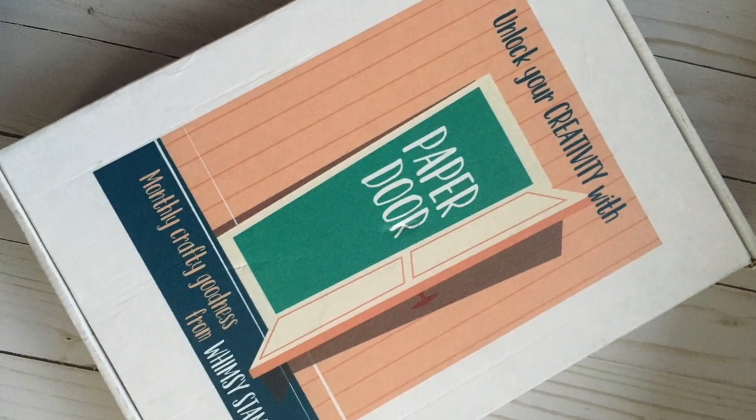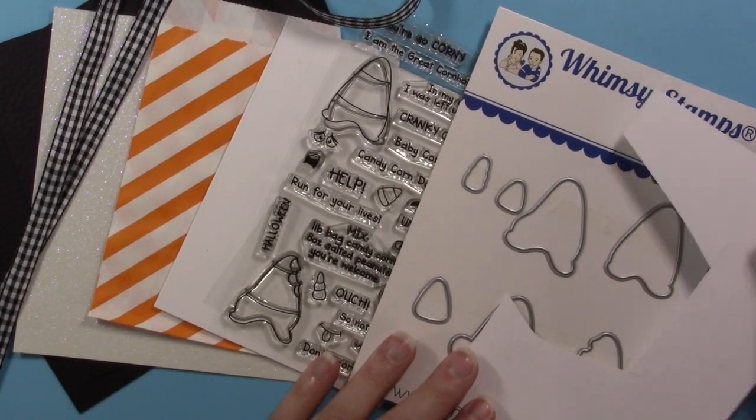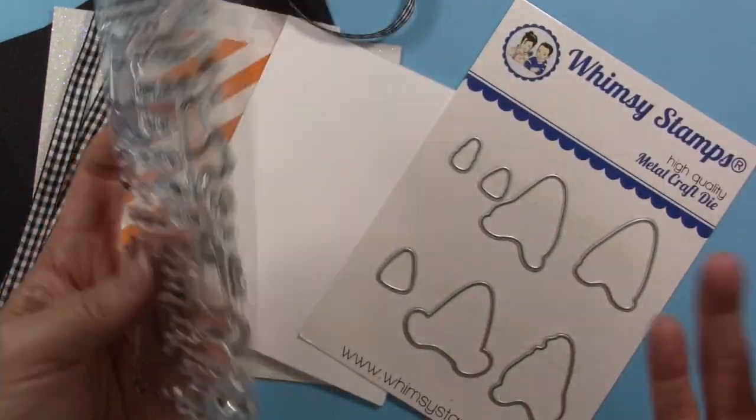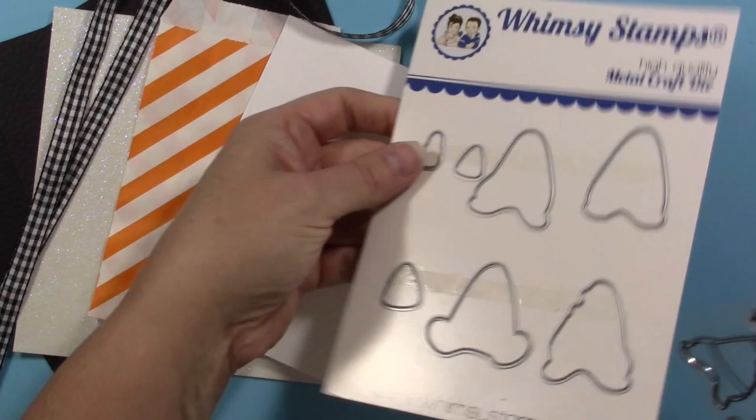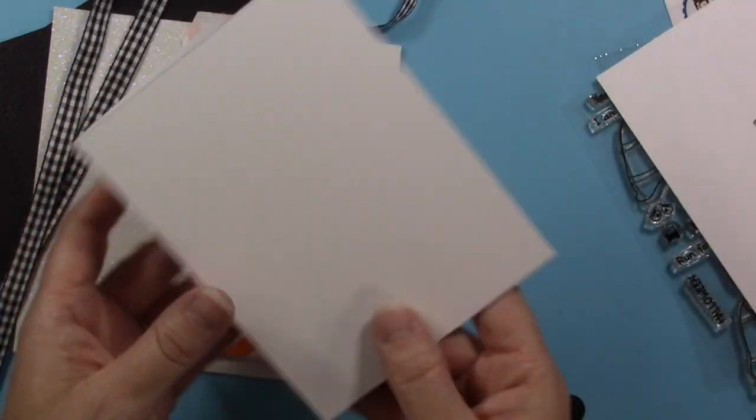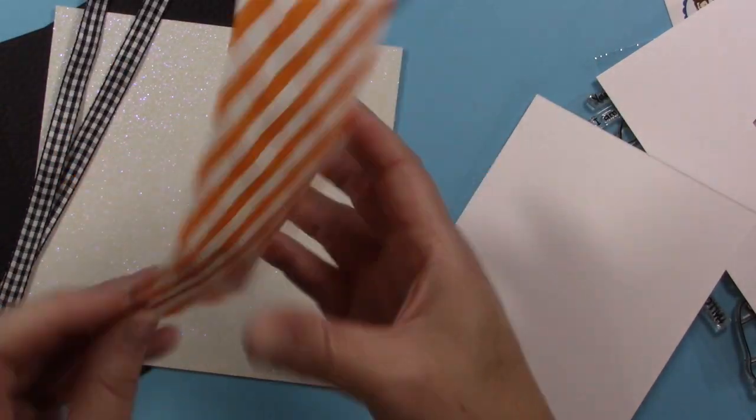Hi everyone, this is Melissa with Melissa Made. Today I'm sharing a project using the Whimsy Stamps Paper Door kit called Corny Candy Corns. It's a September kit with quite a few goodies, including adorable stamps and little goodie bags. Today I'll show you how I made a card that's also a gift card holder.